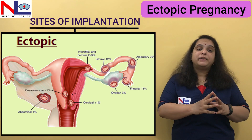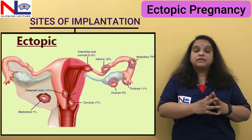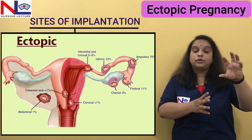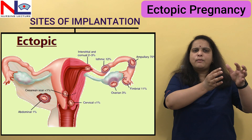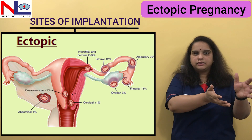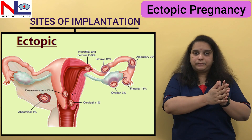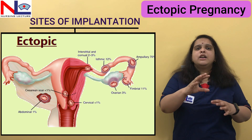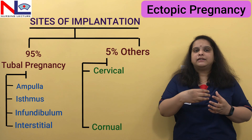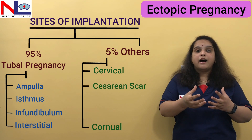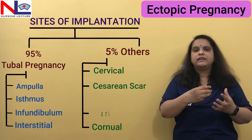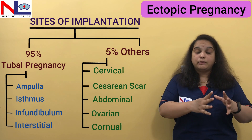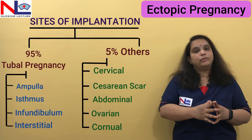Cornual pregnancy can also occur if the woman has a congenital uterine anomaly with a rudimentary horn — an extra lobe or extra part of the uterus — where the fertilized ovum can implant. So cornual, cervical, previous cesarean scar, ovarian, and peritoneal pregnancies all occur in only 5% of cases. The most common type remains tubal pregnancy.